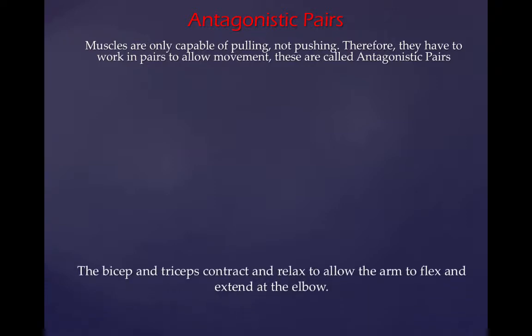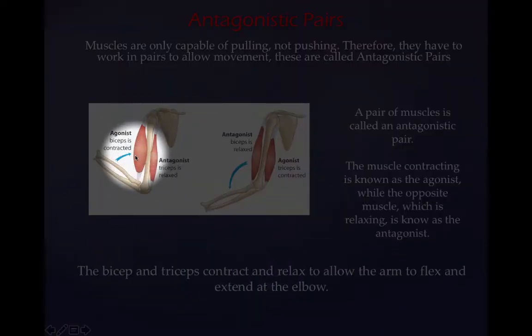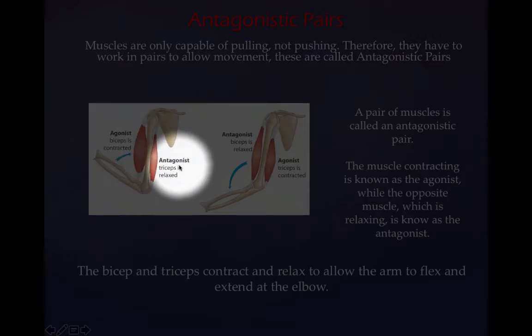The bicep and the tricep contract and relax to allow the arm to flex and extend at the elbow. A pair of muscles is called an antagonistic pair. The muscle contracting is known as the agonist, while the opposite muscle, which is relaxing, is known as the antagonist. As you can see here in this diagram, the agonist is the bicep, which contracts and brings the forearm up towards the shoulder. And the antagonist is the tricep, which relaxes.